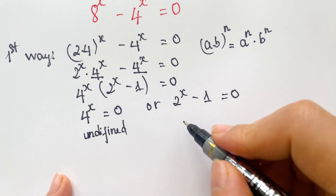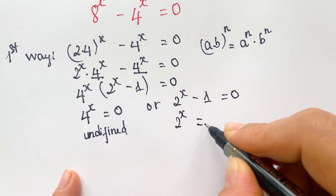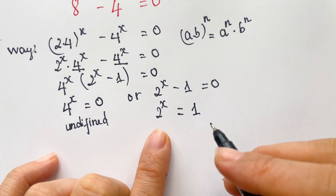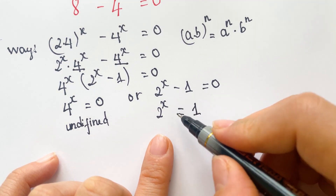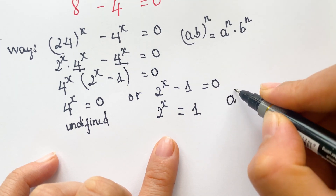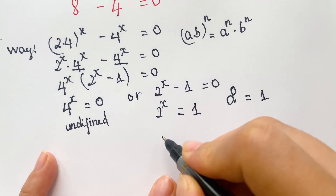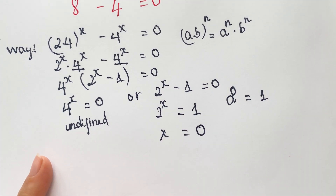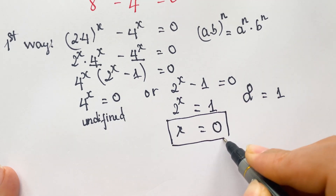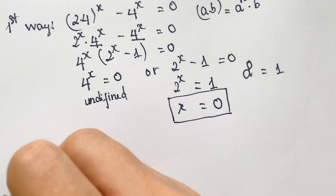So we use only the value of x from the second equation. Therefore, 2 power x is equal to 1. When an exponential equals 1, that means a power 0 is equal to 1. Therefore x is equal to 0. So the first way gives us x equal to 0.